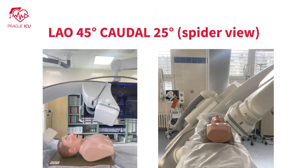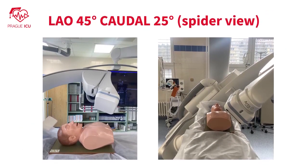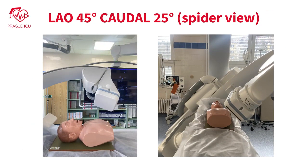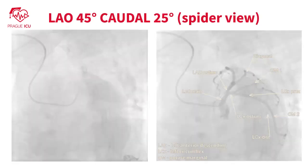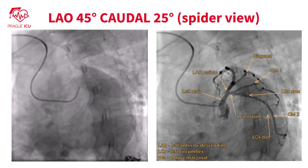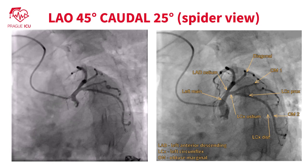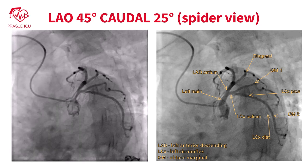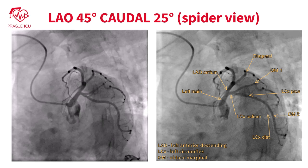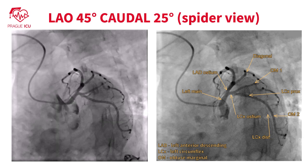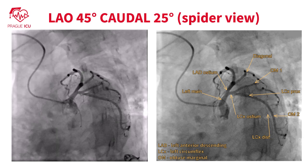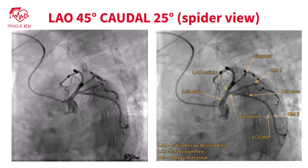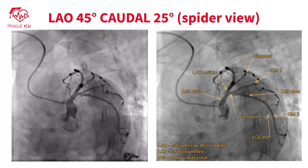Left anterior oblique 45 degrees, caudal 25 degrees view — the so-called spider view — is often the first view taken during diagnostic coronary angiography. It has the advantage of visualizing the proximal left anterior descending artery and left circumflex artery, along with the distal part of the left main coronary artery.